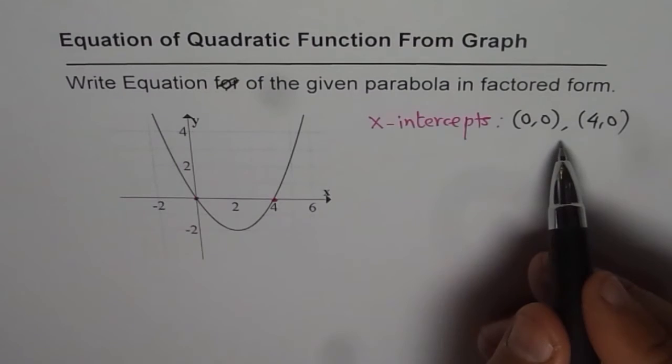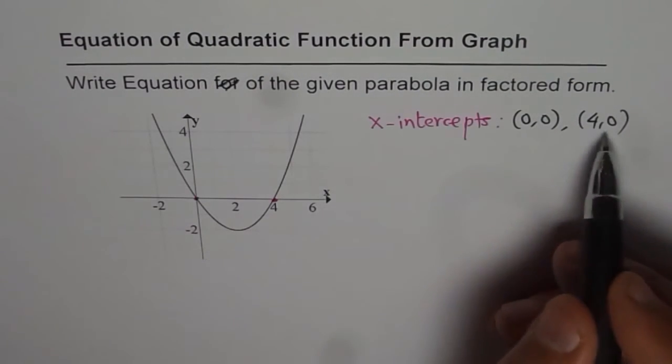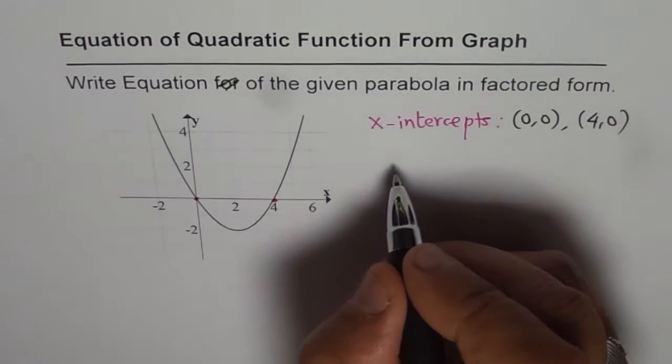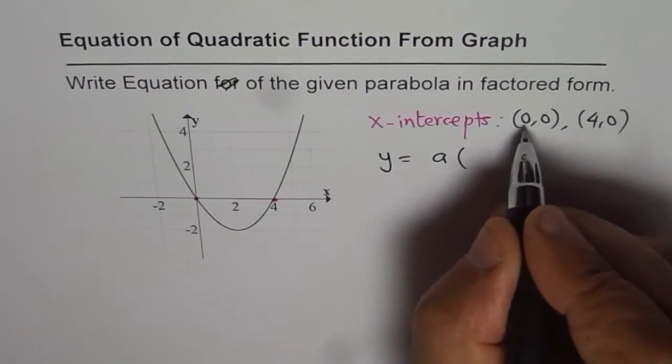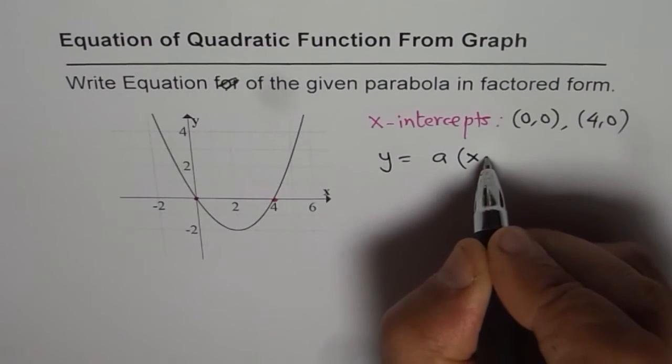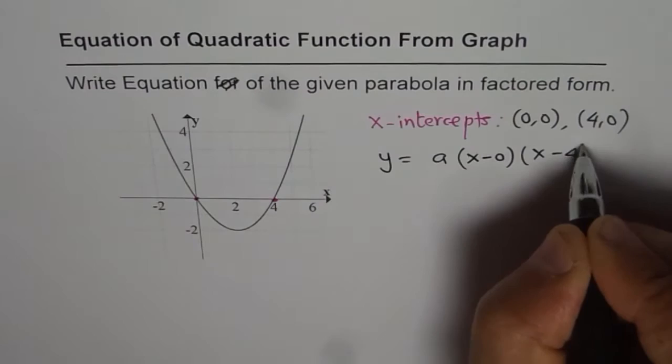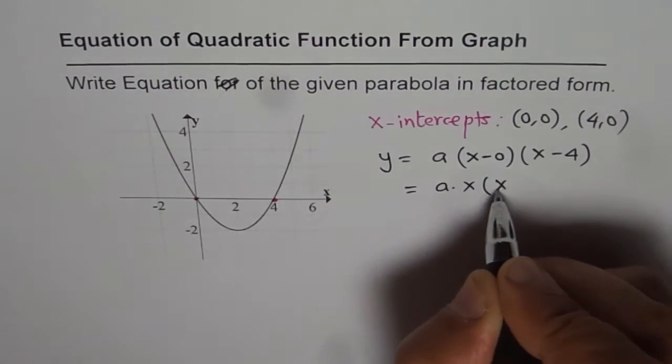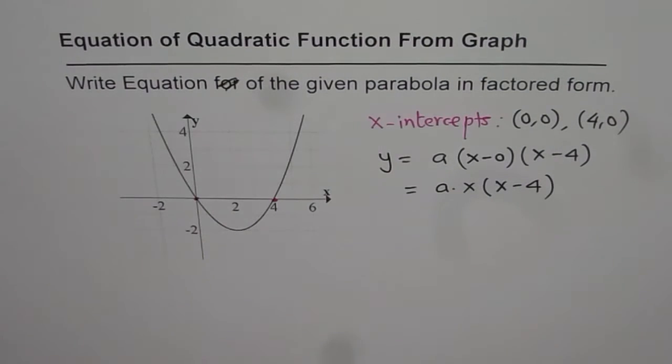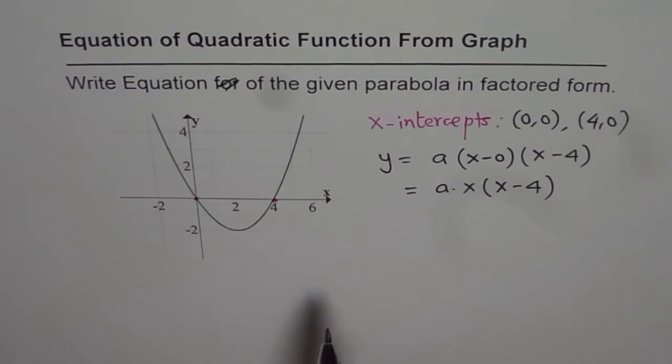Now the family of parabolas or the quadratic functions which will have these two x-intercepts could be written as y equals to a times x minus 0 and x minus 4, that is a times x times (x minus 4). So that becomes the family of all the parabolas which will have these two as their x-intercepts.